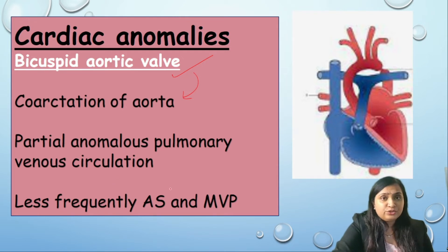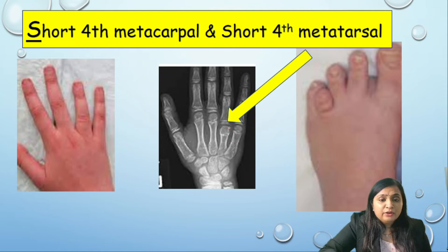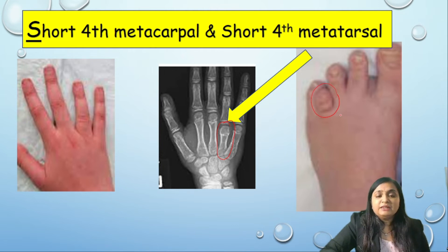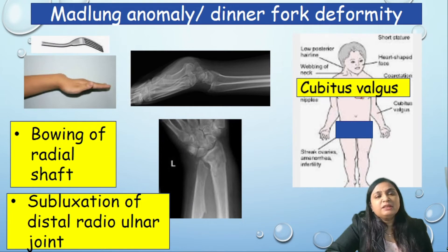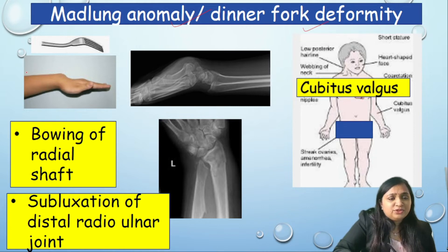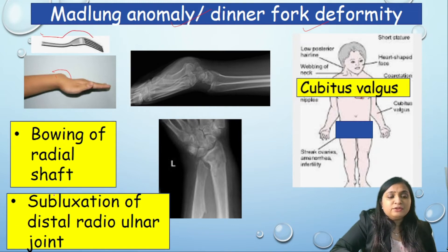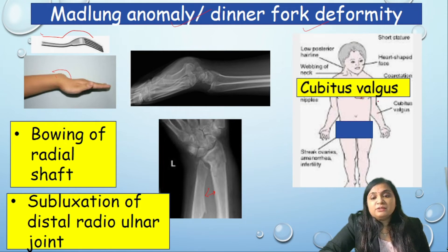Looking at skeletal anomalies: short fourth metacarpal and short fourth metatarsal are associated with Turner syndrome and can be seen on radiograph. A second important skeletal anomaly is Madelung deformity, also known as dinner fork deformity — it is a bowing of the radial shaft due to subluxation of the distal radio-ulnar joint. Third is cubitus valgus, which is an increased carrying angle of the elbow — the distance between the elbow and the axis of the body is increased.